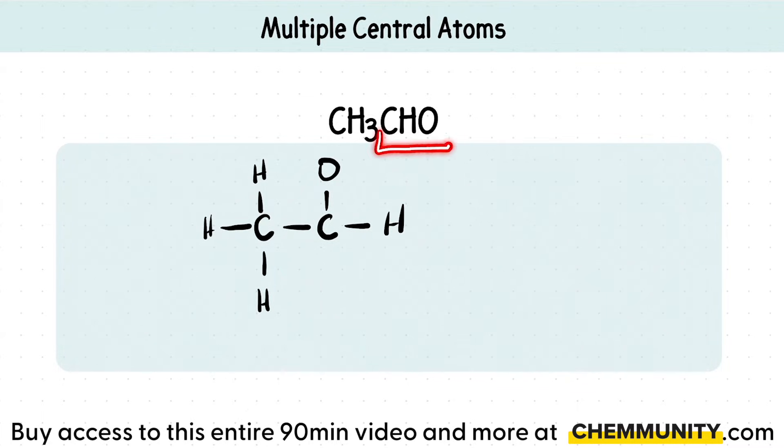Whenever you see this CHO, that is actually saying that this oxygen is bonded to the carbon, and this hydrogen is bonded to the carbon. Oxygen and hydrogen are not bonded to each other. That's only when you see OH. That's when they're bonded to each other.